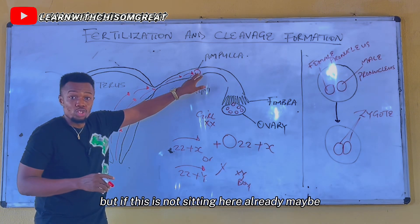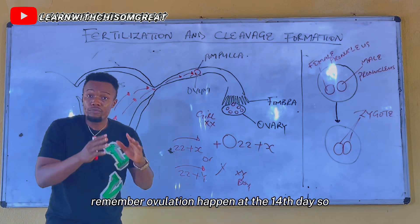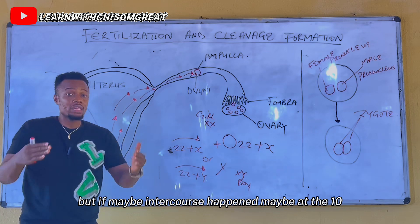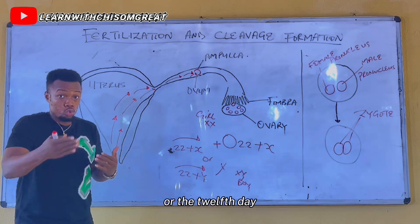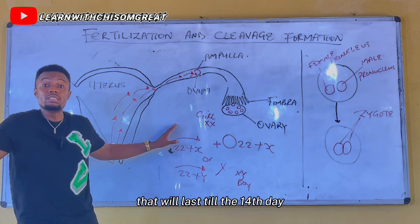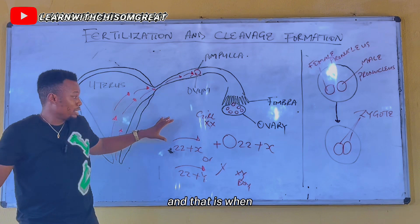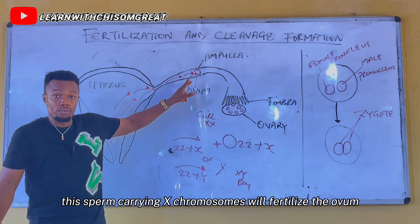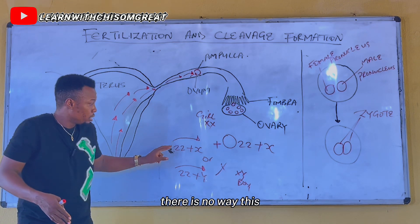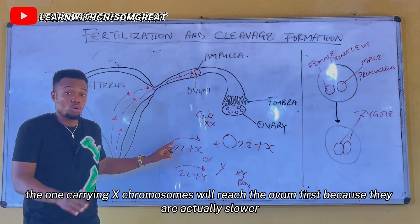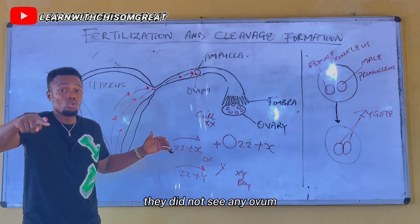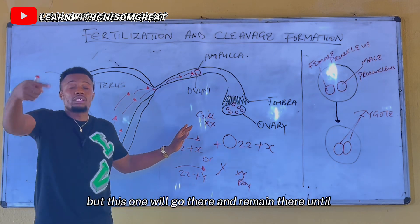But if intercourse happens around the 11th or 12th day — remember ovulation happens at the 14th day — the Y-chromosome sperm will have died by the time the egg is released at the 14th day. It is only the sperm carrying the X chromosome that will last until the 14th day, and that sperm will fertilize the ovum, resulting in a girl. But if intercourse happens on the 14th or 15th day, the Y-chromosome sperm reaches the ovum first and a boy is formed.